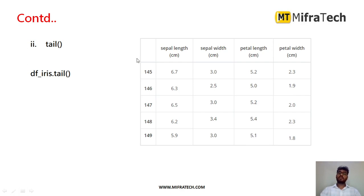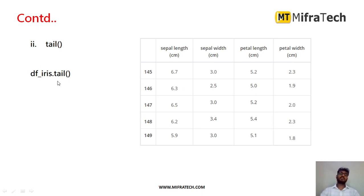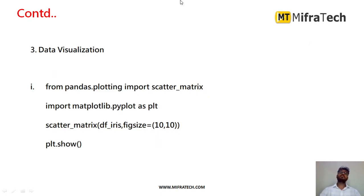There is also a tail() function, which is the opposite of head(). It gives the bottom five rows of the dataset by default. You can mention how many rows you want — for example, tail(20) gives the bottom 20 rows. The command is 'df_iris.tail()', and the last five rows from the given dataset will be displayed.